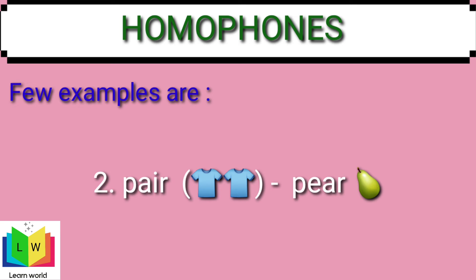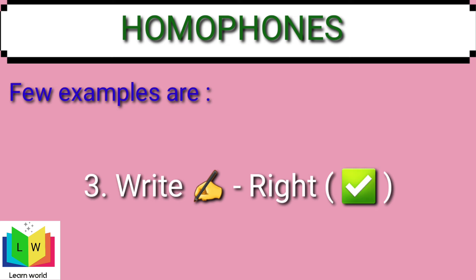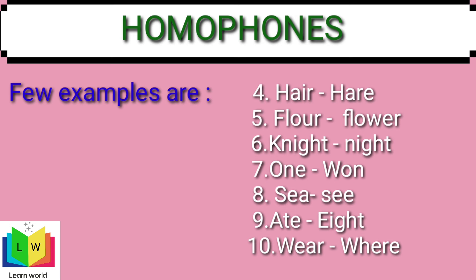One more 'pair' is 'pear' — it's a fruit. Third is 'right': if you check the two spellings, 'right' means writing something, and 'right' means correct. When we say it is correct, we use R-I-G-H-T. So these are examples of homophones. A few more examples are: hair, floor, night, one, and wear.